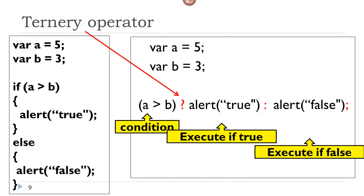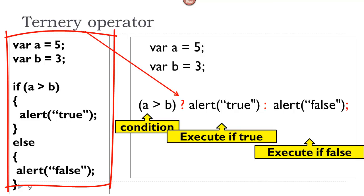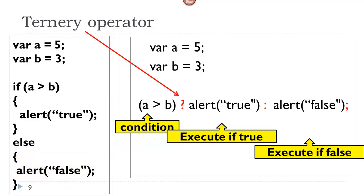The ternary operator — this is actually a very cool way of doing an if. This is not in the book, but you may see it out on the web and I'd like you to know about it. Before we look at the code block on the right, let's look at the code block on the left. Here we have var a equals five, b equals three. If a is less than b, we're going to execute something if it is true; else we're going to execute something if it is false. So the ternary operator is a shorthand way of writing an if-else statement — only good for if-else.